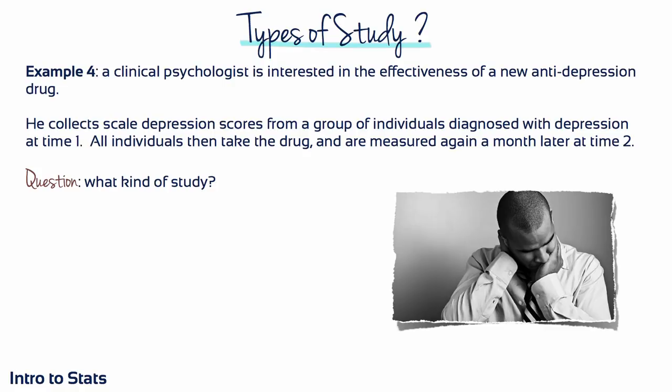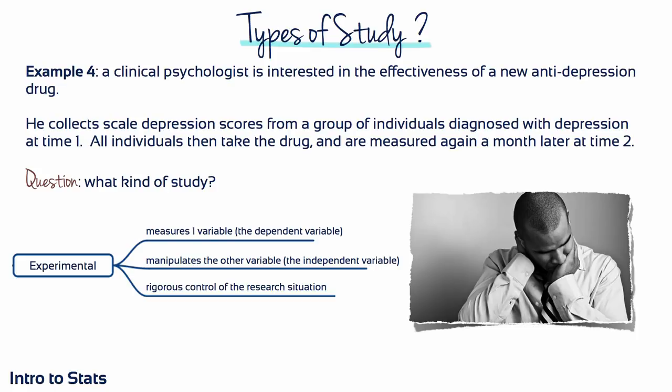Example 4: A clinical psychologist is interested in the effectiveness of a new anti-depression drug. He collects scaled depression scores from individuals diagnosed with depression at time 1, all individuals then take the drug and are measured again a month later at time 2. The psychologist manipulates one variable — the anti-depression drug, which is being controlled and assigned to all participants — and measures one variable, depression scores, at two time points. This is an experimental study.